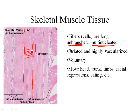Skeletal muscle is also voluntary, which means we control it — we tell our muscles what to do. You don't tell your heart when to beat or your GI tract when to move, but you do tell your skeletal muscles what to do. They move all different parts: your head, trunk, limbs, and they make facial expressions. You need them for eating and all sorts of other things.